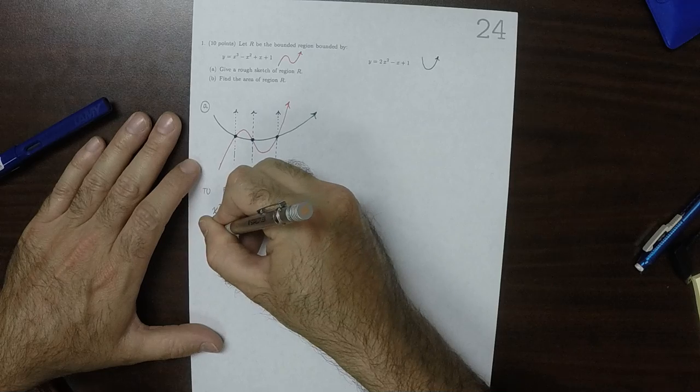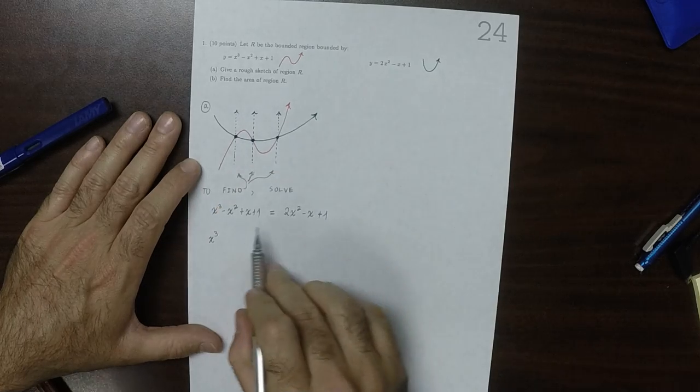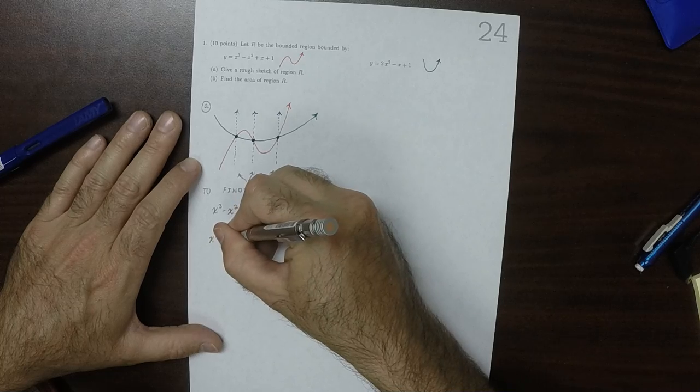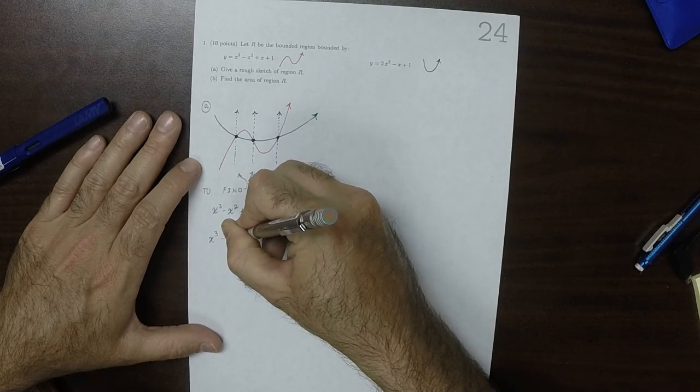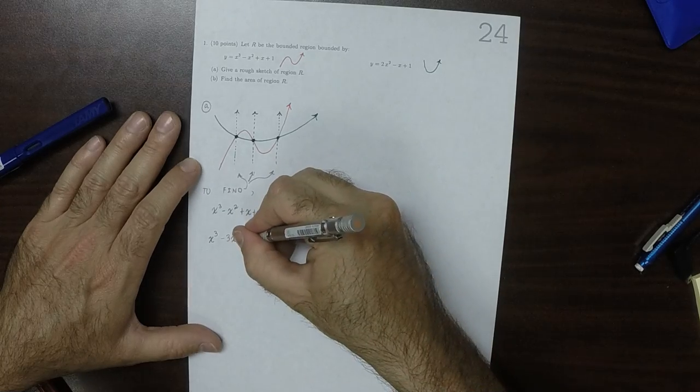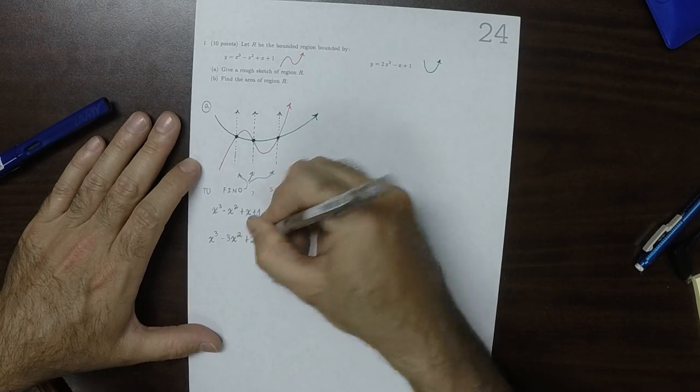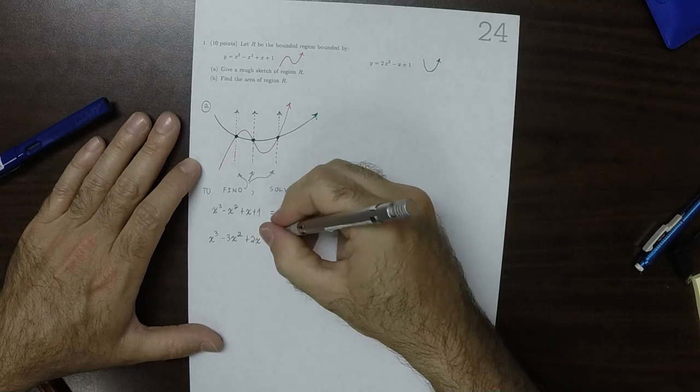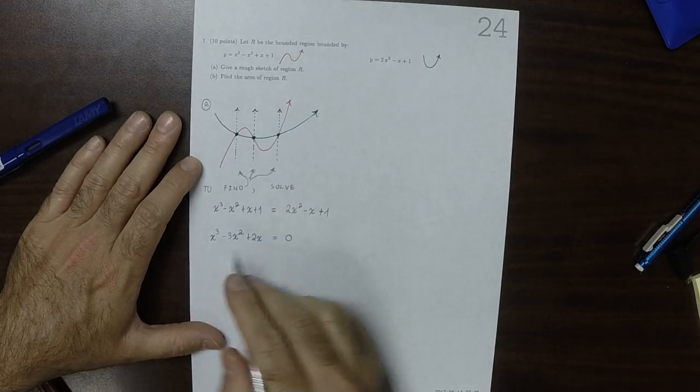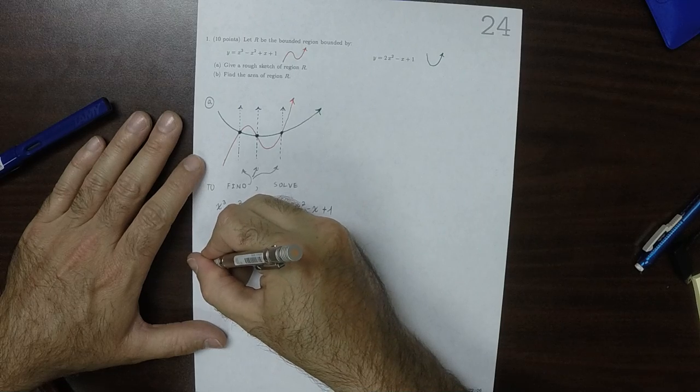So there's just the one x cubed. If I move the 2x squareds to the left-hand side, that'd be minus 3x squared. If I add an x to both sides, that'd be plus 2x. And if I subtract 1 from both sides, they're all gone.